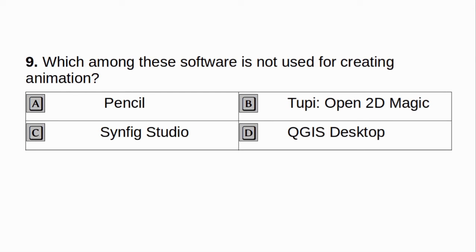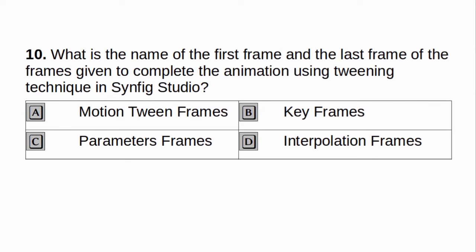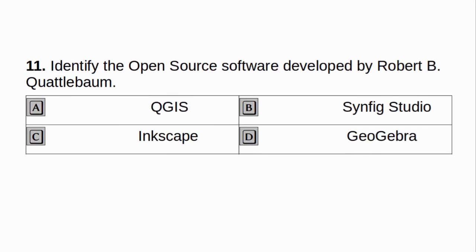Which among these software is not used for creating animation? A. Pencil. B. 2P2D Magic. C. Synfig Studio. D. QGIS Desktop. Answer: D. QGIS Desktop. What is the name of the first frame and the last frame of the frames given to complete the animation using tweening technique in Synfig Studio? A. Motion Team Frames. B. Keyframes. C. Parameters Frames. D. Interpolation Frames. Answer: B. Keyframes.